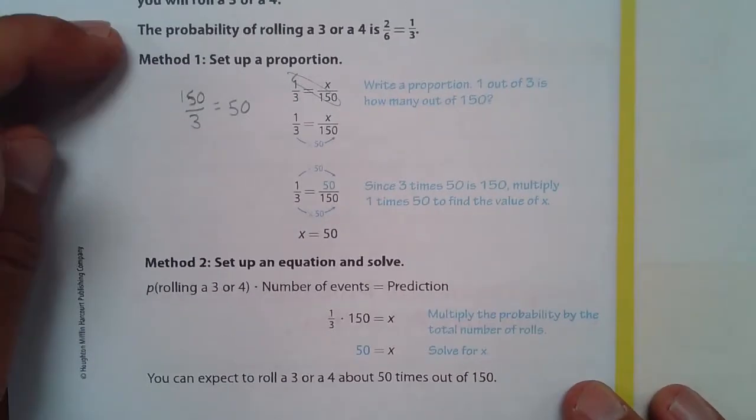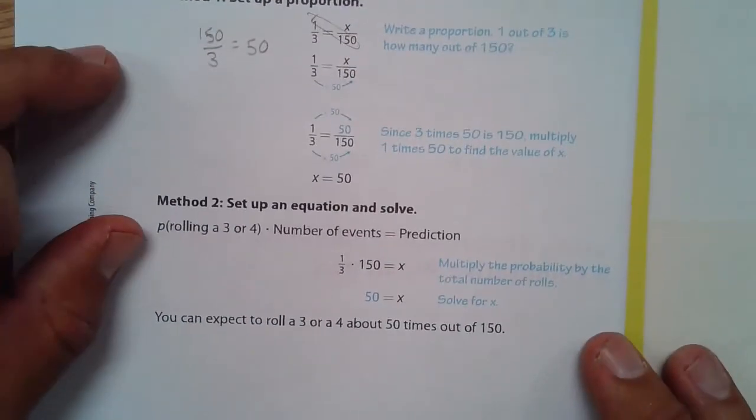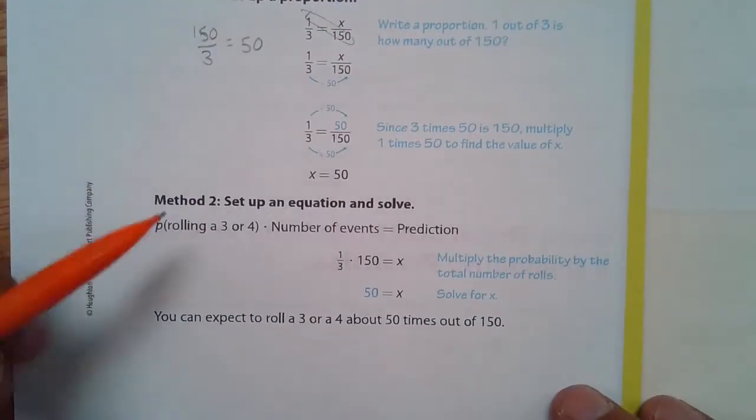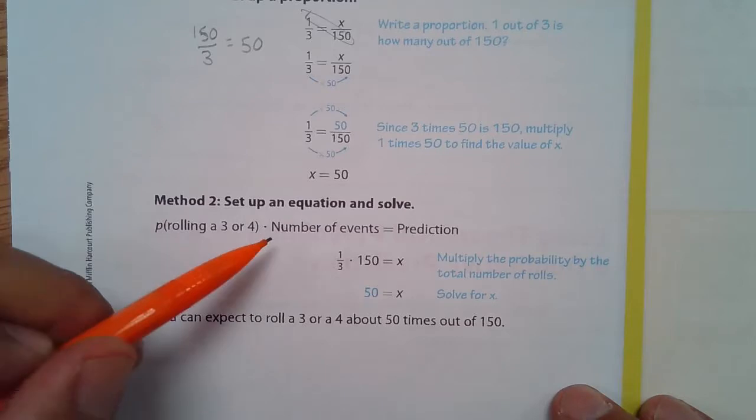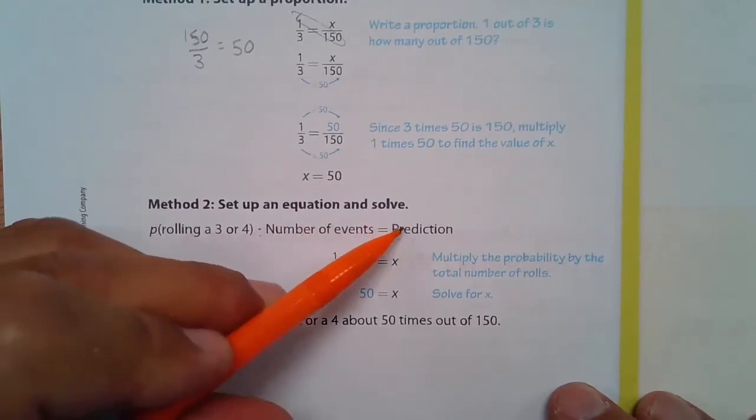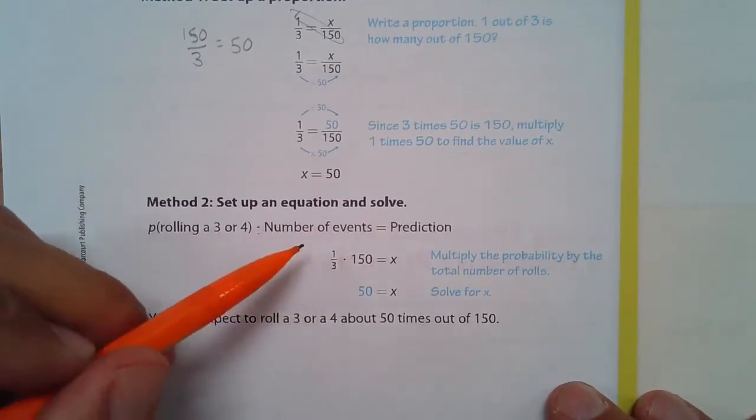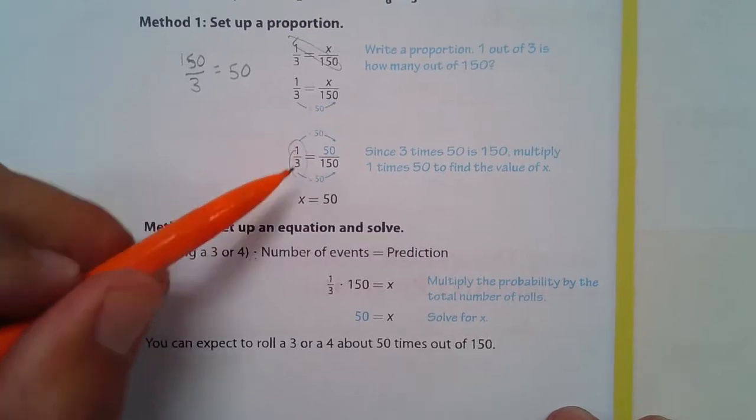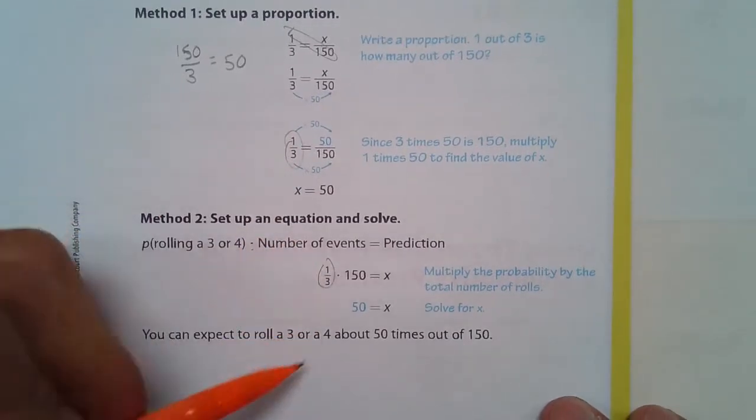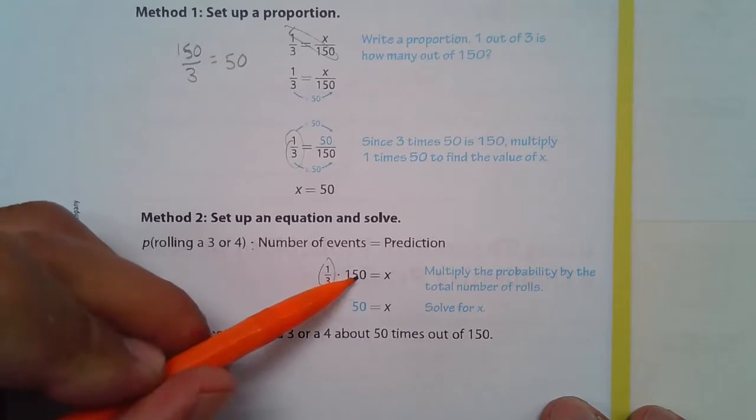Method two. So that's one way of doing it and this second way you could set up an equation. The probability of rolling a three or four times the number of events gives you your prediction. So that's that one-third times the number of events. So one-third times 150.